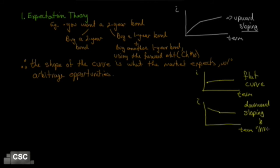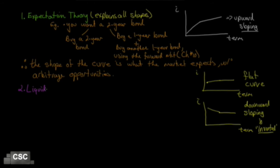Isn't it interesting that just looking at the slope of the yield curve can tell us if we expect an impending recession? Expectation theory says that the shape of the yield curve reflects forward interest rates that represent what the market expects rates to be. Hence, all interest rates reflect market expectations, and when we look at the yield curve, we're seeing what the market expects interest rates to be. That's absolute power.